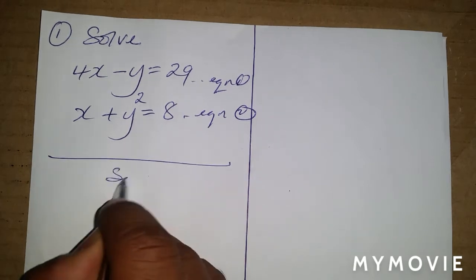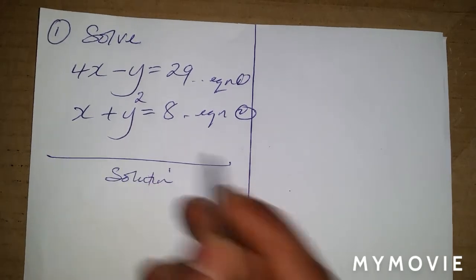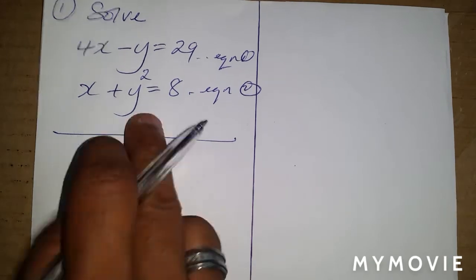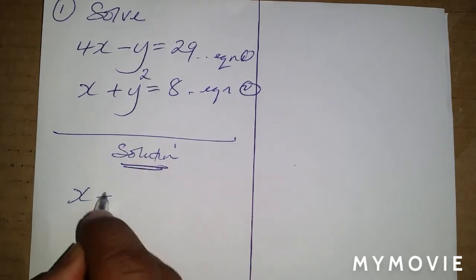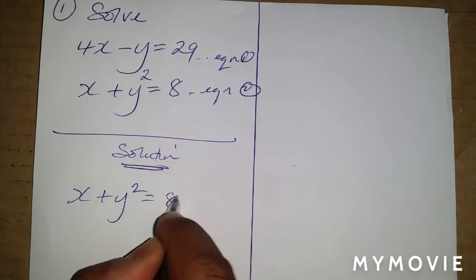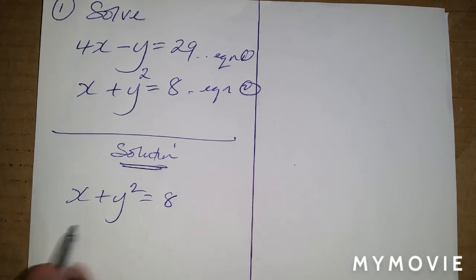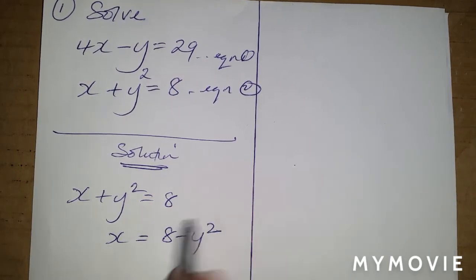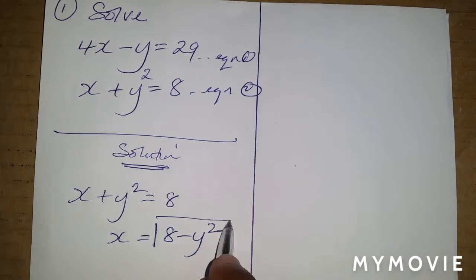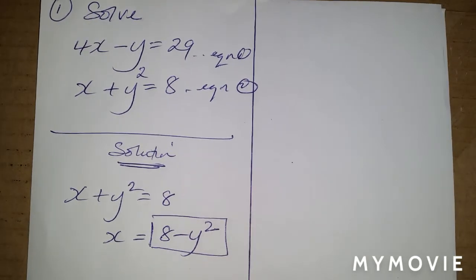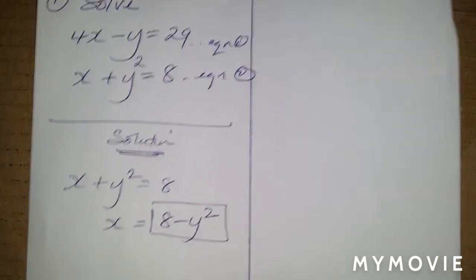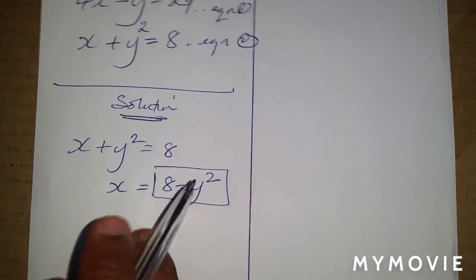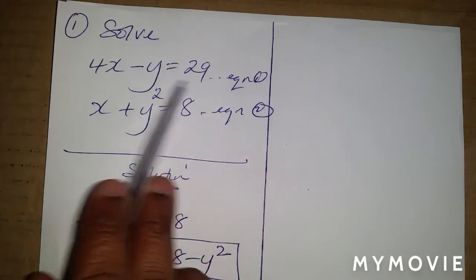What I'm going to do here is use the non-linear equation, which is x plus y squared equals 8, and I'm going to make x the subject. So x would be equal to 8 minus y squared. Now I know what x is equal to, so I'm going to substitute this inside the linear equation.